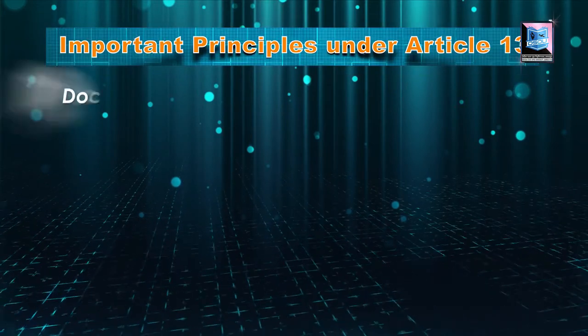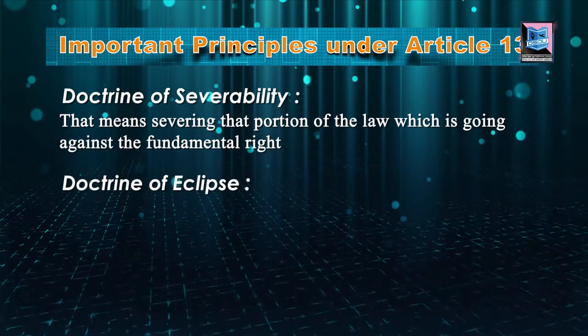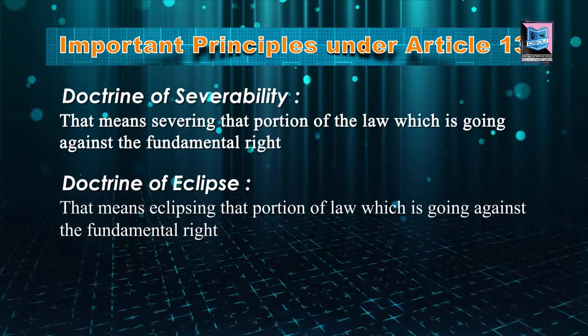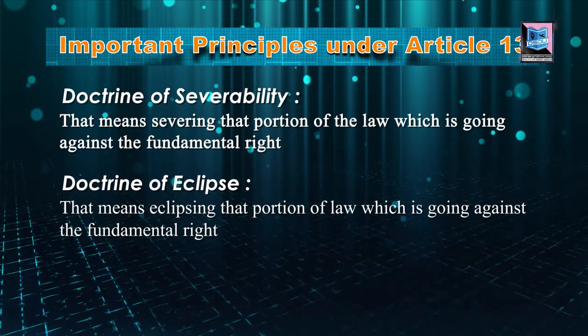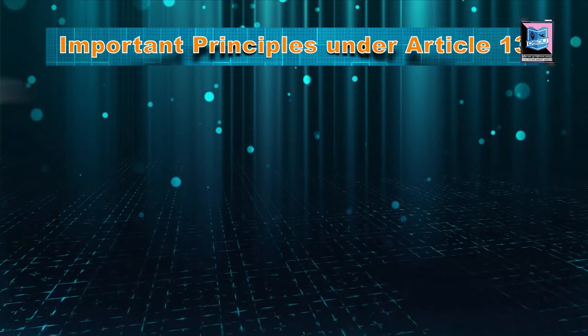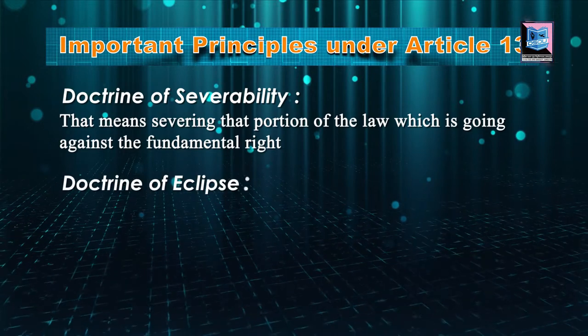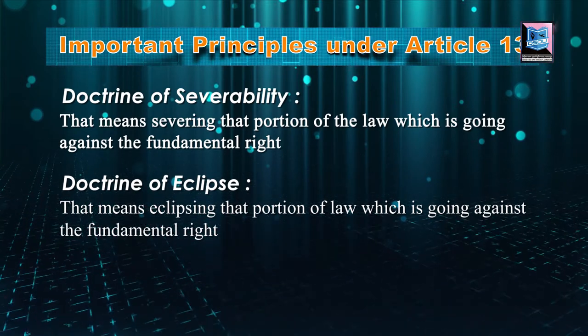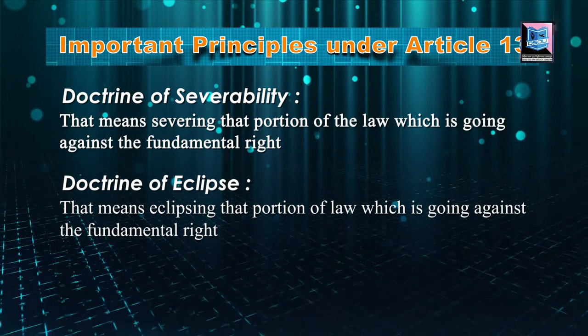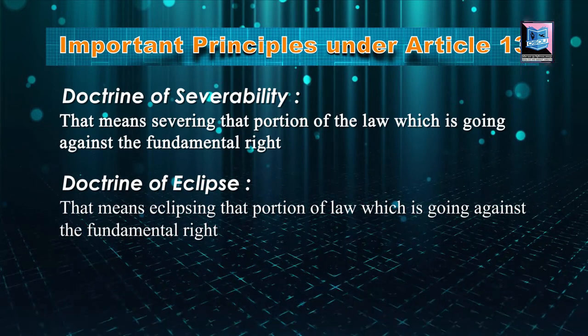That's why two principles come into existence: the principle of severability, which we already discussed, and the doctrine of Eclipse. What is the doctrine of Eclipse? Consider the story of Superman — a DC comic character who is all-powerful, the greatest hero who can fight anyone and fly. But Superman has one small problem: Kryptonite. Whenever Kryptonite comes close to Superman, he has no power. The same goes with the idea of Eclipse. As long as a fundamental right exists, any law going against it becomes passive in nature. The moment that fundamental right is removed, that act becomes active again — that's the doctrine of Eclipse. You are eclipsing those laws going against the fundamental right, and the moment that right is removed, that law becomes active again.